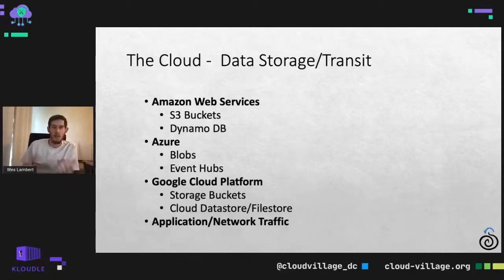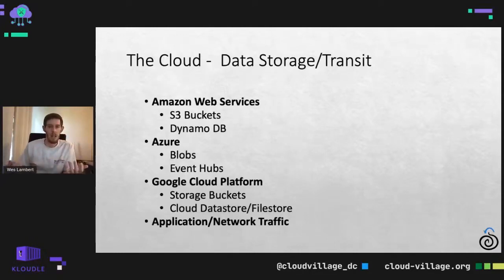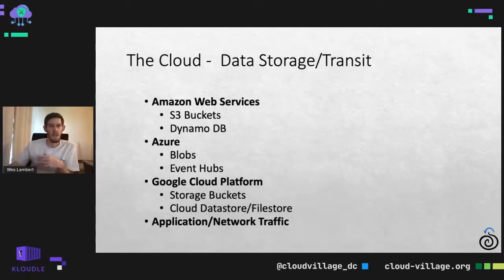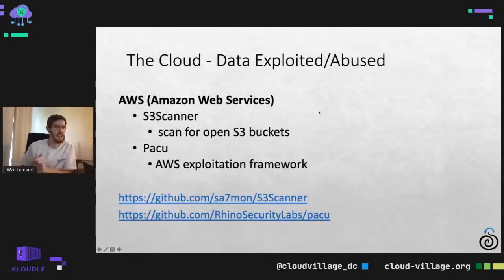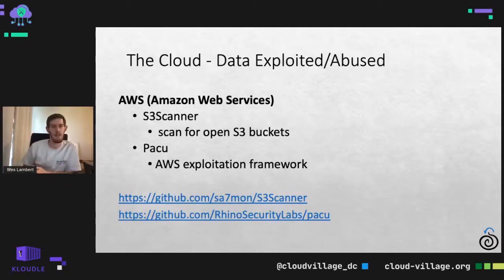There may be other mechanisms in addition to the application or machine instances — network traffic, the data going back and forth between those systems. All this data and stuff going back and forth in the cloud — a lot of times, obviously this is why we talk about security monitoring in the cloud — this data is exploited and can be abused, or the access to this data can be abused.